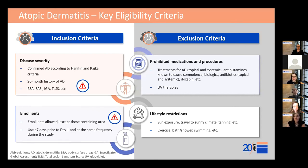Once the study is designed, the next step is to describe the desired study population with eligibility criteria. Disease severity should be clearly defined using BSA, EASI, and TLSS where applicable, and these measures should be consistent with one another and with the proposed severity range. Since AD is a highly fluctuating condition, these criteria should be assessed at both screening and baseline. Emollients — except those containing urea — should be allowed in AD trials. Rather than fixing application frequency, we recommend writing protocols that provide flexibility, stating emollients should be used at the same frequency during the study as in a defined prior period, to reduce protocol deviations.